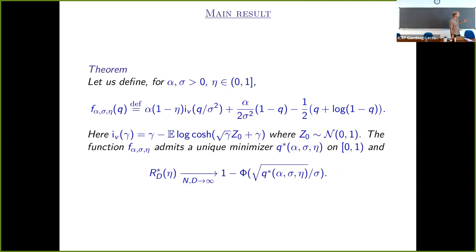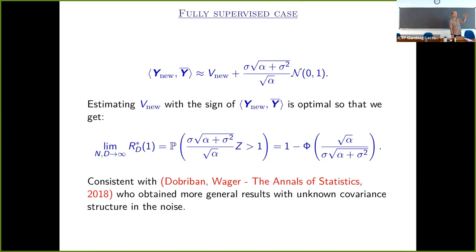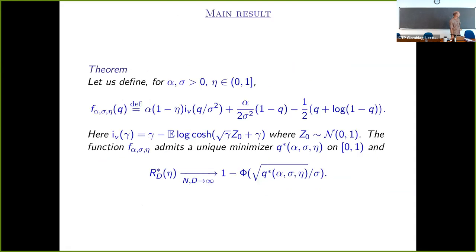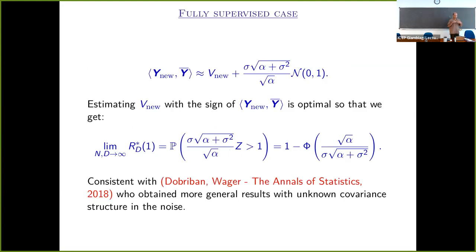We describe basically two algorithms. The first one is the oracle, where you are given the direction u in addition, and the fully supervised case where you see all the labels — corresponding to eta equals one. For both cases, we took a specific algorithm and computed the performance of that algorithm. It's not clear a priori that the performance of this algorithm is actually optimal — so there is a gap here.